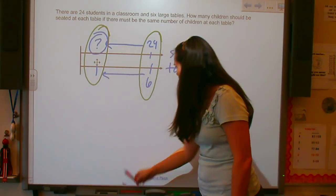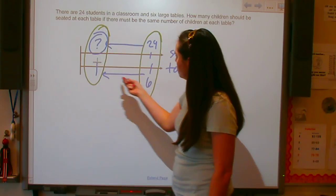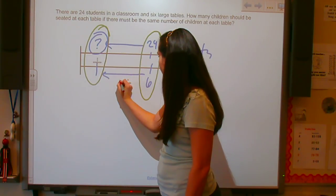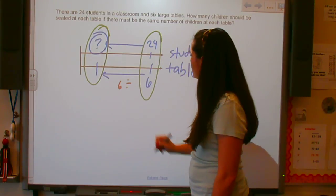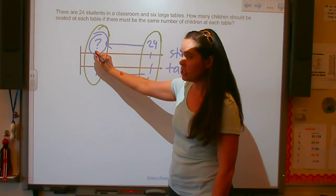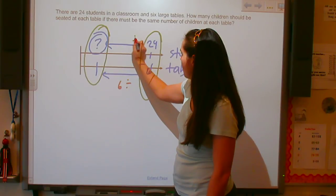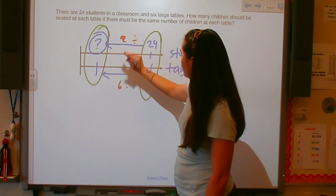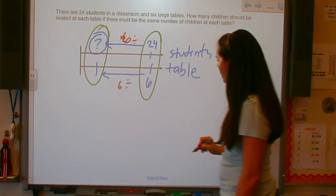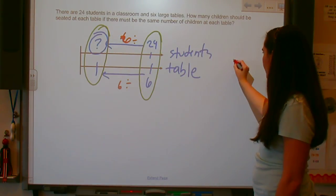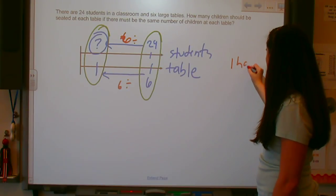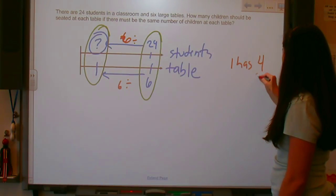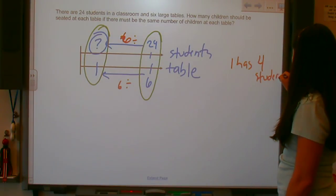So now I want to say, to get from six to one, that means that I divide six by six. So to get from 24 to question mark, I'm going to do the same thing. I'm going to divide 24 by six. And so here I get that one table has four students.